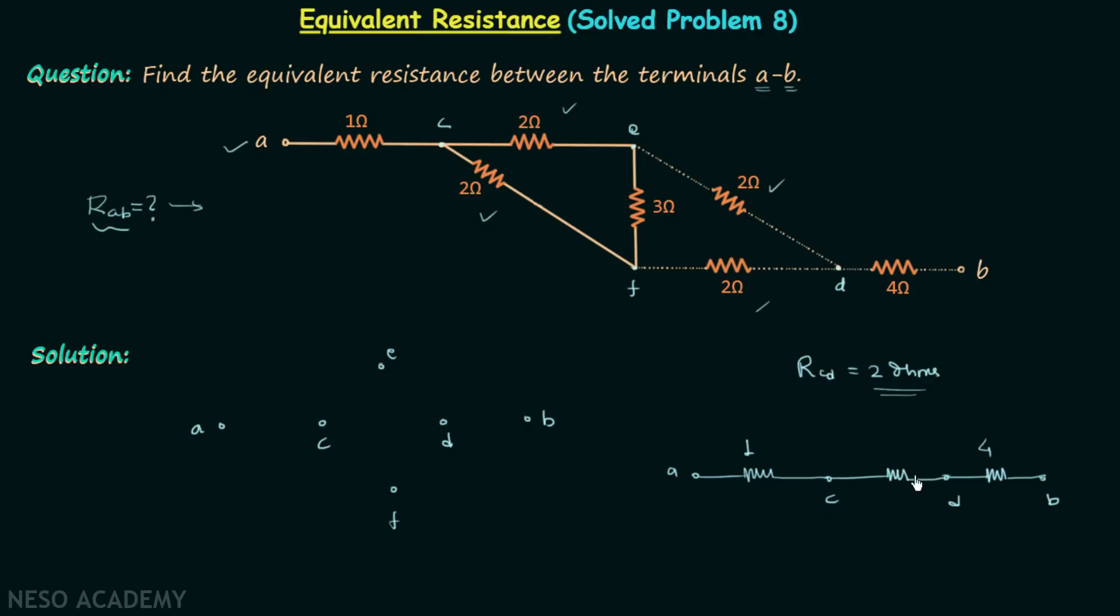We are required to calculate the equivalent resistance between A and B, and this is equal to one plus two plus four. All three resistors are in series, so finally we are getting seven ohms as our answer.